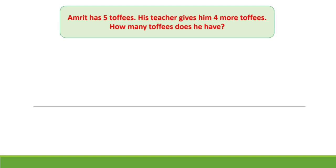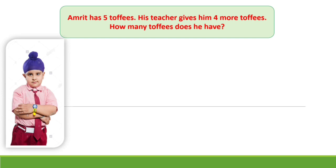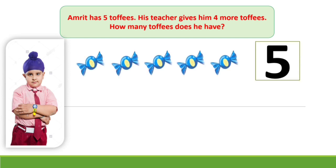Amrit has 5 toffees. Let's count these toffees now. 1, 2, 3, 4 and 5. Amrit has 5 toffees. How many more does the teacher give? The teacher gives 4 more.